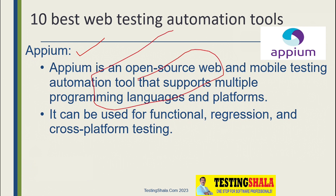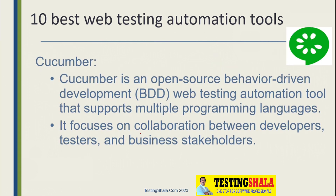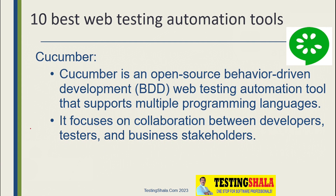The next type of automation tool is Appium. Appium is an open source automation tool for both web and mobile automation testing. Similar to Selenium, it supports multiple programming languages and multiple platforms as well. Using Appium, we can do functional testing, regression, as well as cross-browser testing.